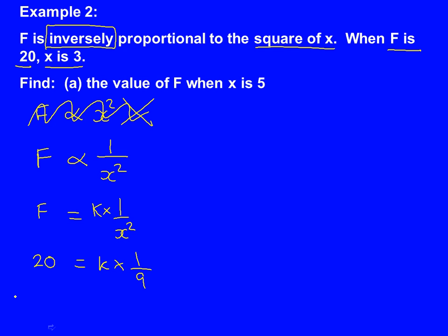Now what we do, we want K on its own. So to find K, we're going to times by this 9 on the bottom to get rid of the 9. So times both sides by the 9. So 20 times 9 is 180. So K is 180.